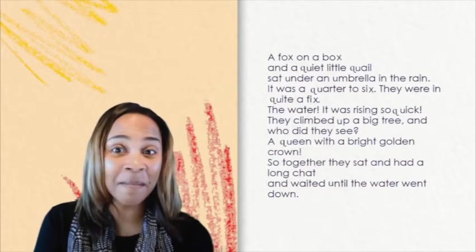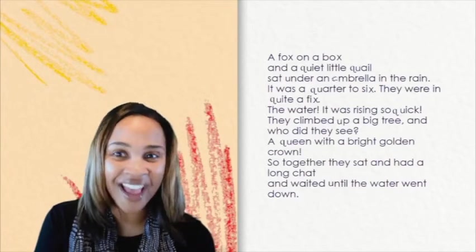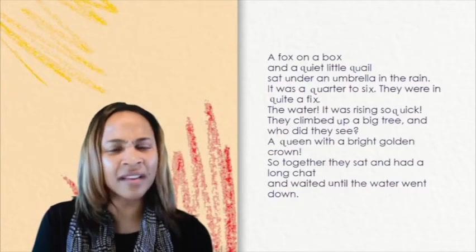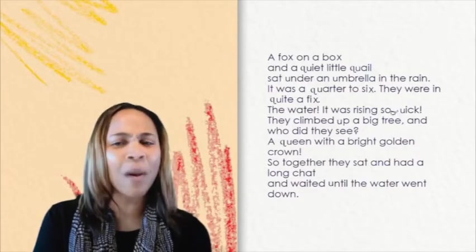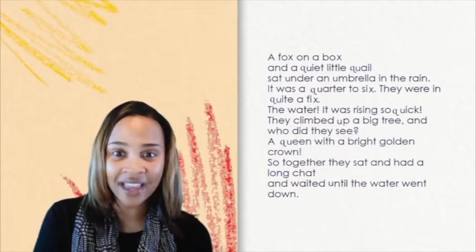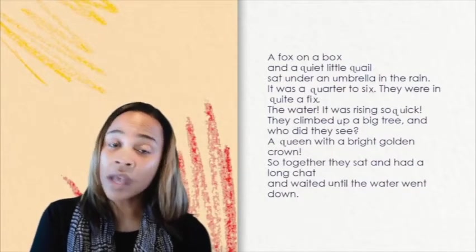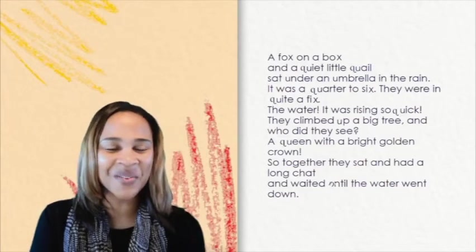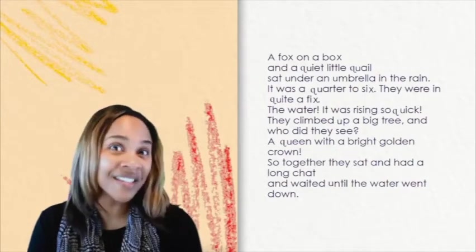A fox on a box and a quiet little quail sat under an umbrella in the rain. It was a quarter to six. They were in quite a fix. The water, it was rising so quick. They climbed up a big tree and who did they see? A queen with a bright golden crown. So together they sat and had a long chat and waited until the water went down. I hope you found all of those Q, U, and X words.